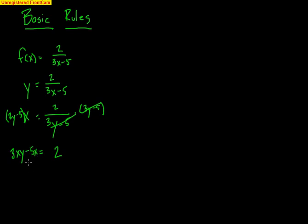Now notice that I have one y — it is right there. I'm going to point my arrow right at it, so that's the only y that I have to get by itself. I don't have two y's, I don't have to worry about factoring any kind of y out. So first thing I do is I need this negative 5x gone, so I'm going to add 5x to both sides, so I get 3xy equals...